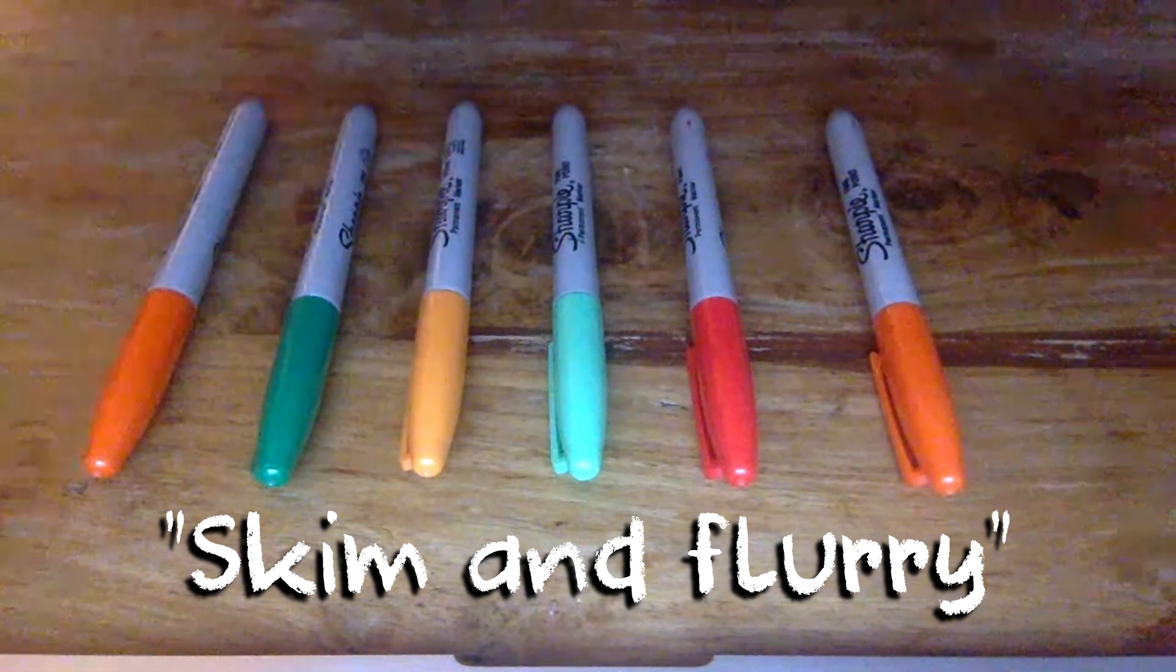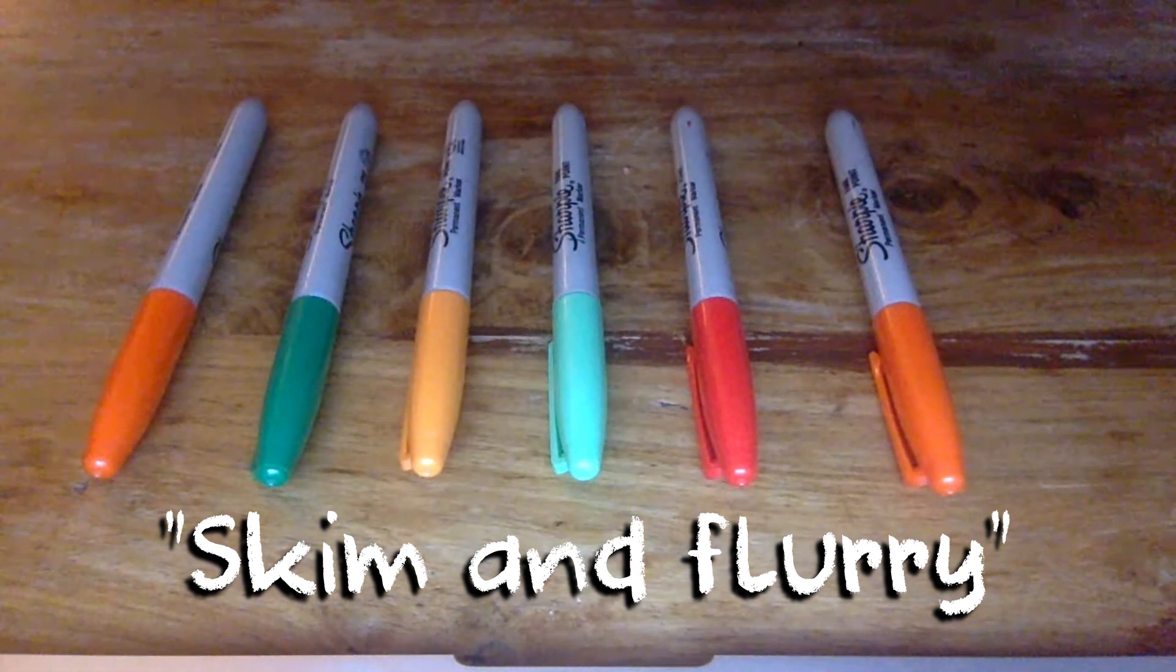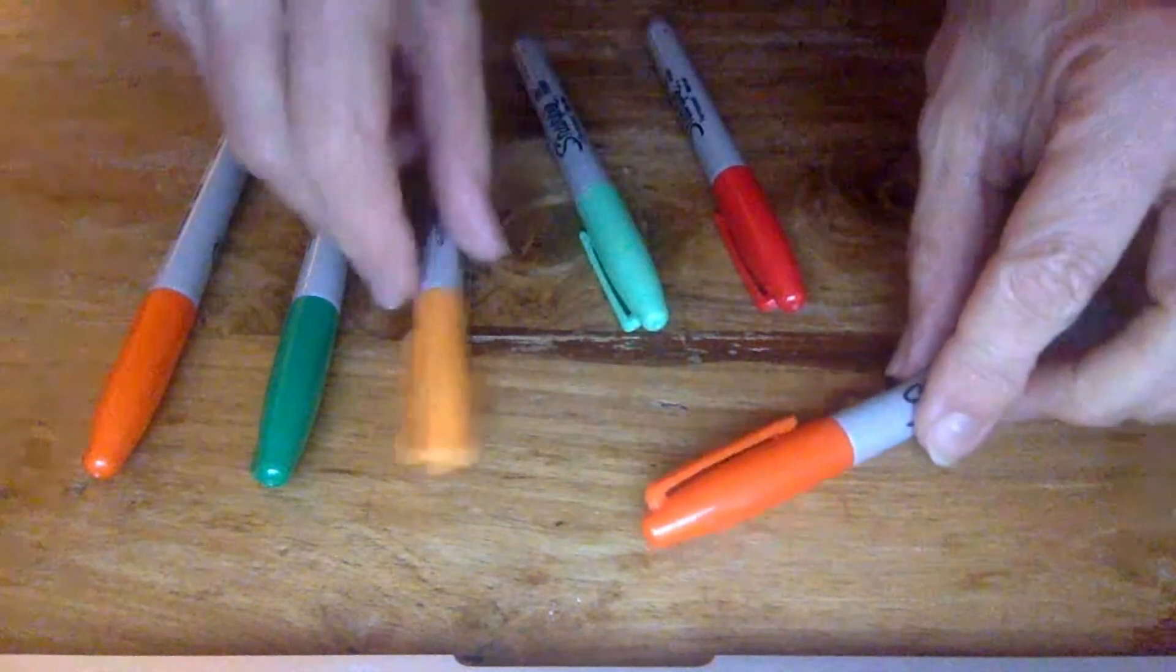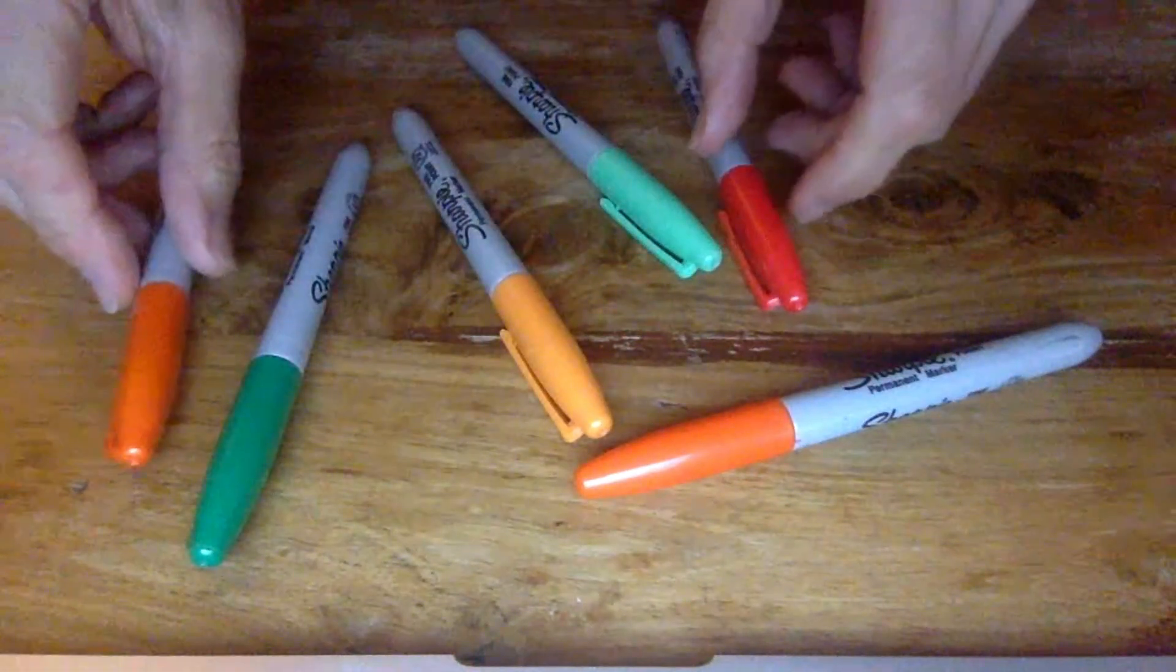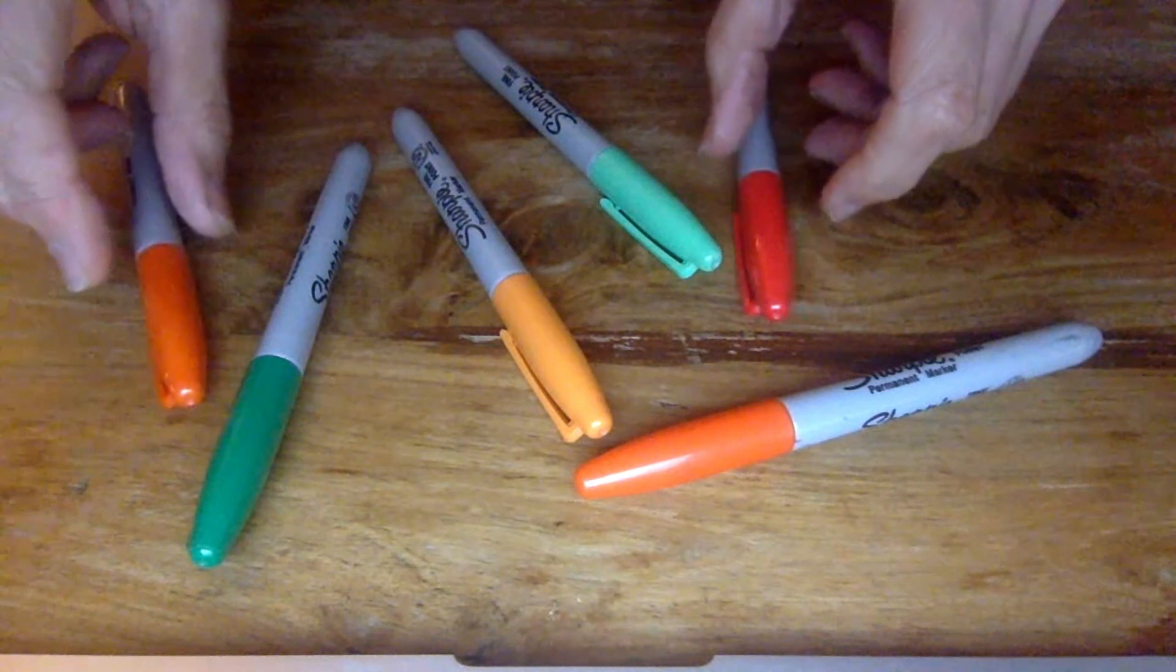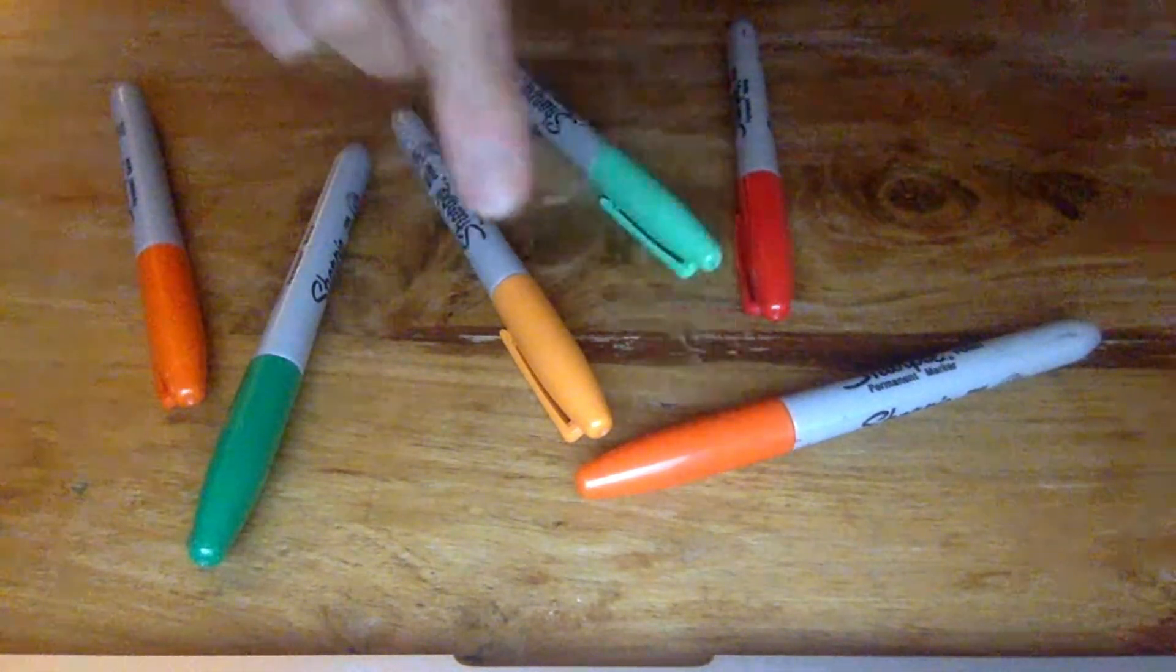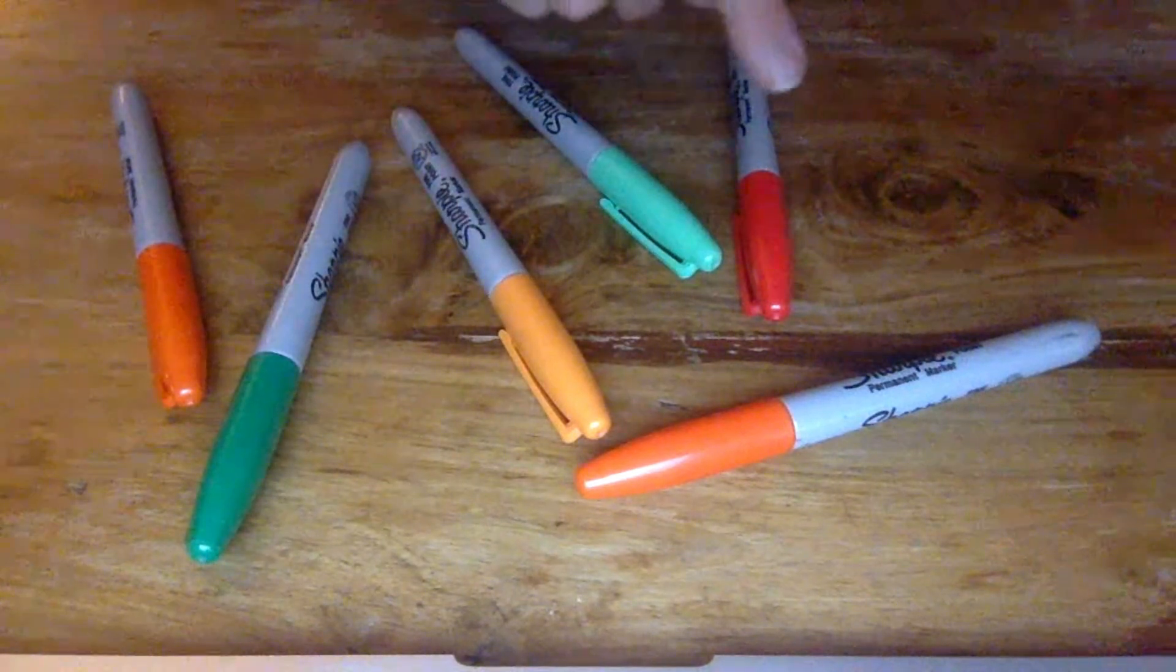Or they flurry, they count an object more than once. And this happens more often when they have not yet learned how to count systematically. So one, two, three, four, five, six, seven, eight.